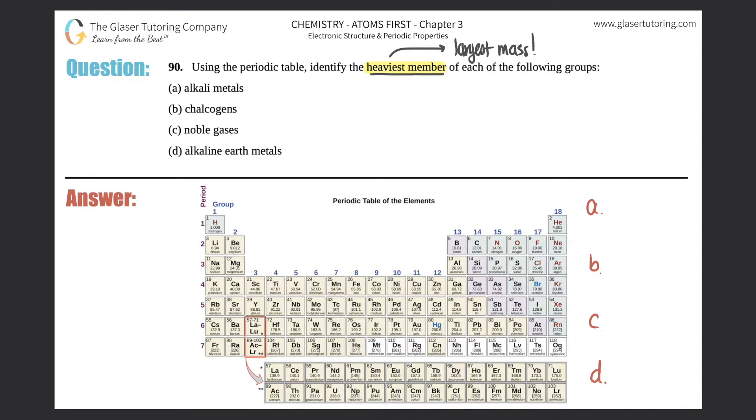Remember, as you go down a group on the periodic table, the size of the atom will always increase - you get larger and larger. That means elements at the bottom will have the largest mass. Elements at the top will have the smallest mass, which was what number 89 asked about.